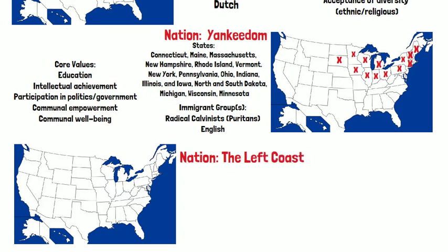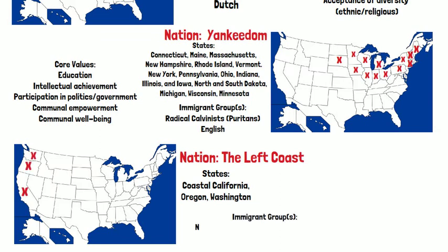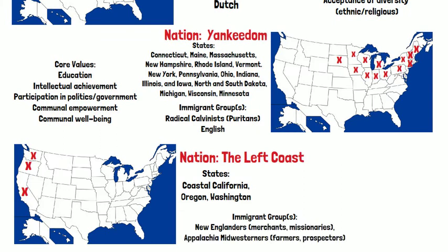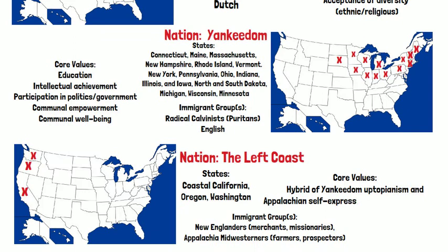The next nation is the Left Coast. The immigrant groups here were New Englanders — merchants and missionaries — as well as Appalachian Midwesterners. The states include coastal California, Oregon, and Washington. The core values are a hybrid of Yankeedom, Utopianism, and Appalachian self-expression and self-exploration.